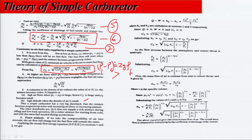Thus a simple carburetor has a major drawback: the mixture becomes progressively richer with increasing air flows or increasing altitude. The main drawbacks are that it does not supply a rich mixture during idling and low-speed load operation, does not supply a richer mixture for cold starting, and cannot supply the extra fuel needed during acceleration. These drawbacks are overcome by modifications to the carburetor.